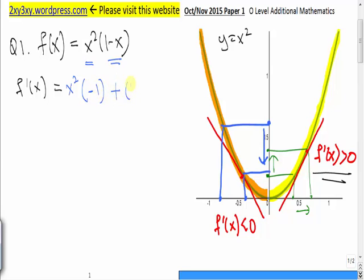Plus, product rule says plus. Now I keep the second term and differentiate the first term. Simplify the expression.